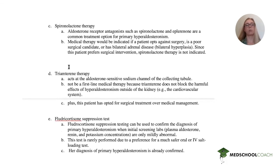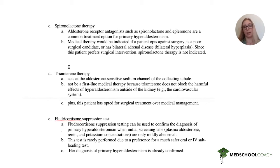A fludrocortisone suppression test confirms the diagnosis of primary hyperaldosteronism when the initial screening labs are a little bit abnormal — when you're unsure if it's adrenal or endocrine in origin. However, this test is unlikely to be ordered here because it's easier to do an oral or IV salt loading test, which this patient already had done.